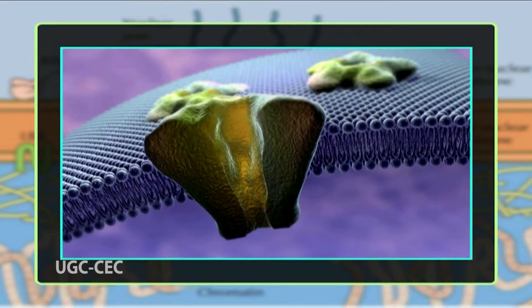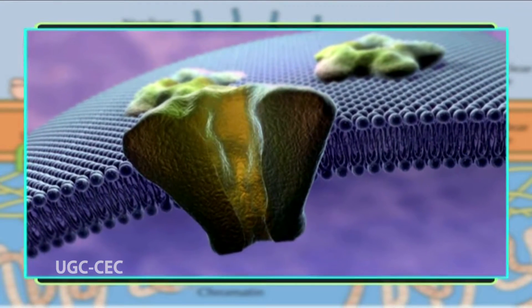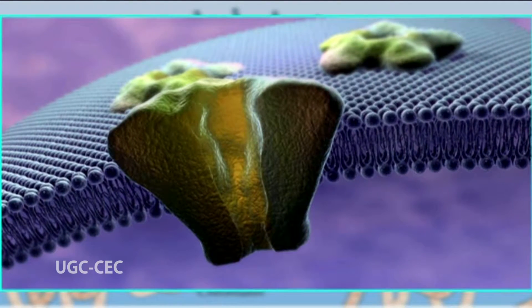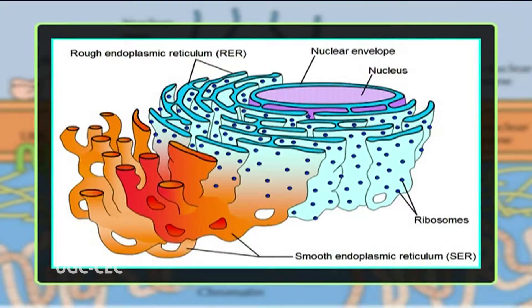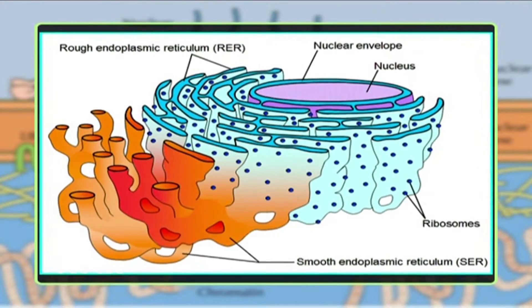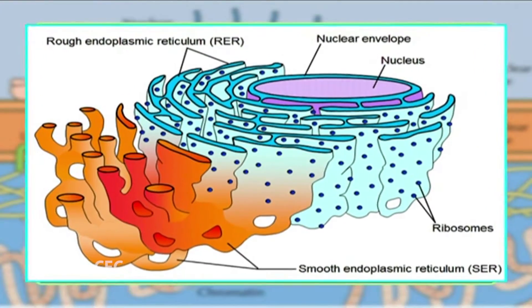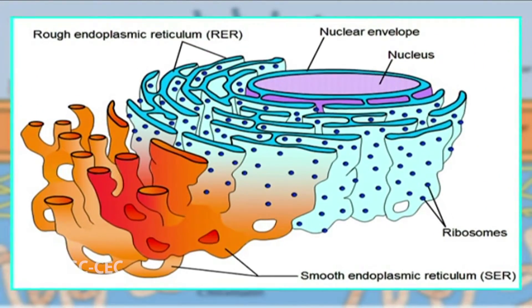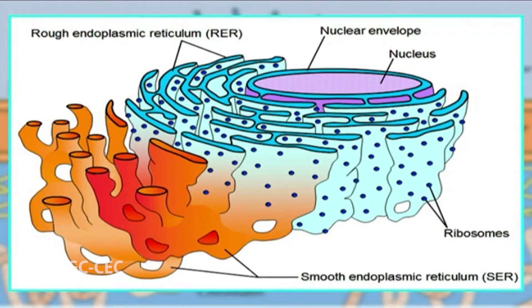Like other cell membranes, the nuclear membranes are phospholipid bilayers permeable only to small non-polar molecules. The nuclear envelope has a complex structure consisting of two nuclear membranes, an underlying nuclear lamina, and nuclear pore complexes. The outer nuclear membrane is continuous with the endoplasmic reticulum, so the space between the inner and outer nuclear membranes is directly connected with the lumen of the ER and has ribosomes bound to its cytoplasmic surface.